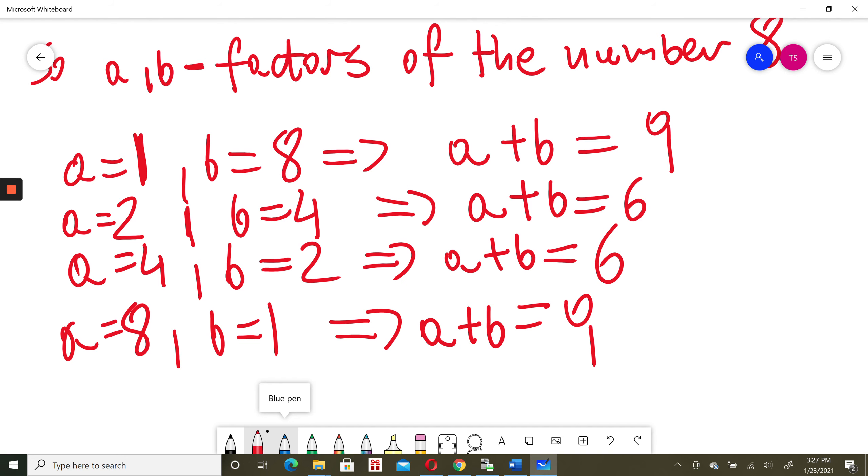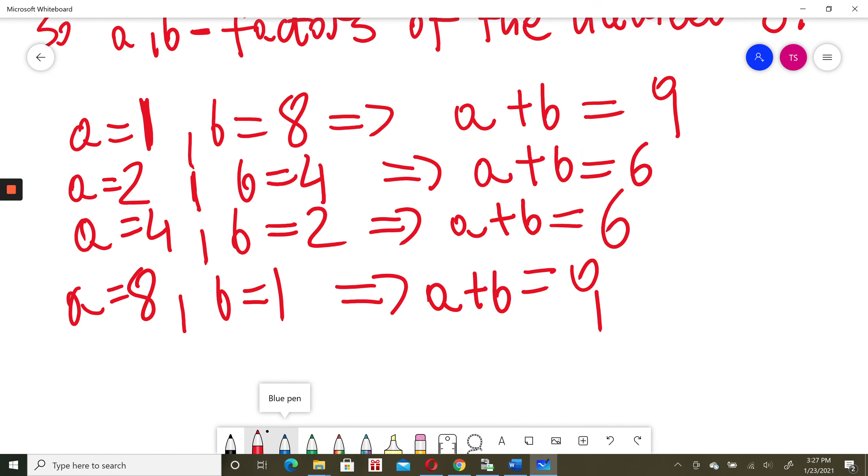The question was, what is the smallest possible value for a plus b? So smallest possible value for a plus b could happen here or here. Anyway, the smallest possible value for a plus b will be 6. And 6 was c.